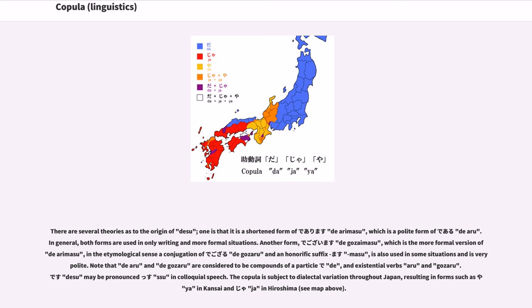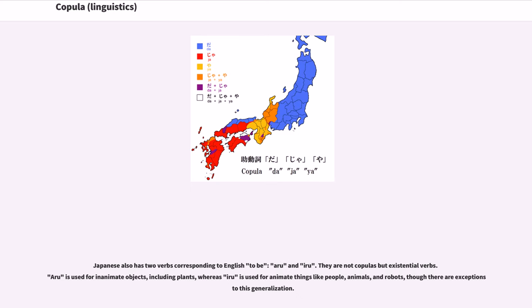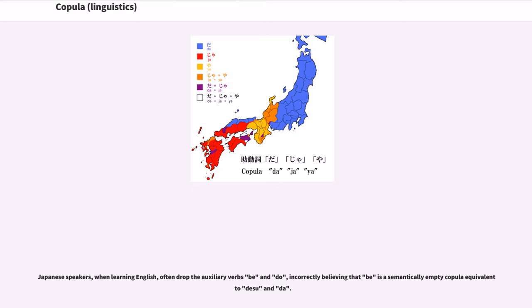Japanese also has two verbs corresponding to English 'to be': 'aru' and 'iru.' They are not copulas but existential verbs. 'Aru' is used for inanimate objects (including plants), whereas 'iru' is used for animate things like people, animals, and robots, though there are exceptions. Japanese speakers, when learning English, often drop the auxiliary verbs 'be' and 'do,' incorrectly believing that 'be' is a semantically empty copula equivalent to 'desu' and 'da.'